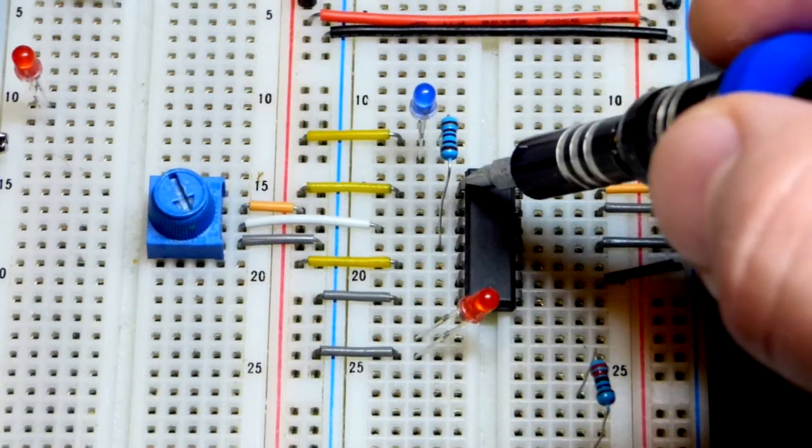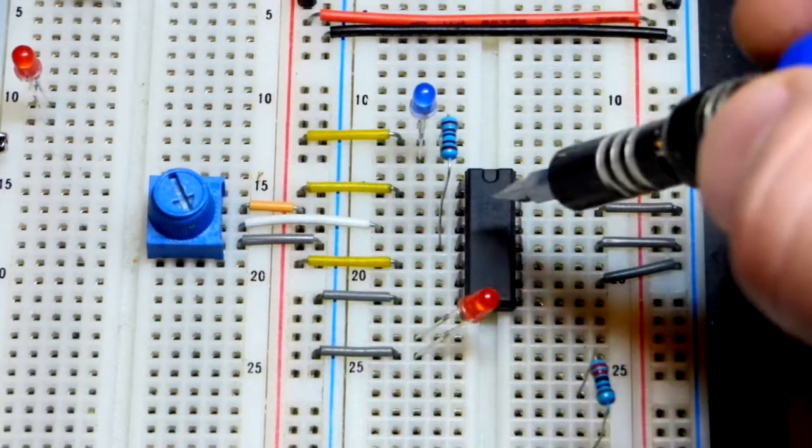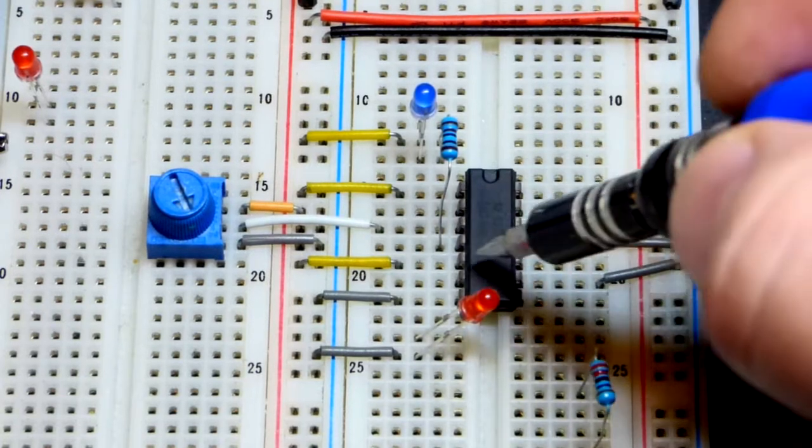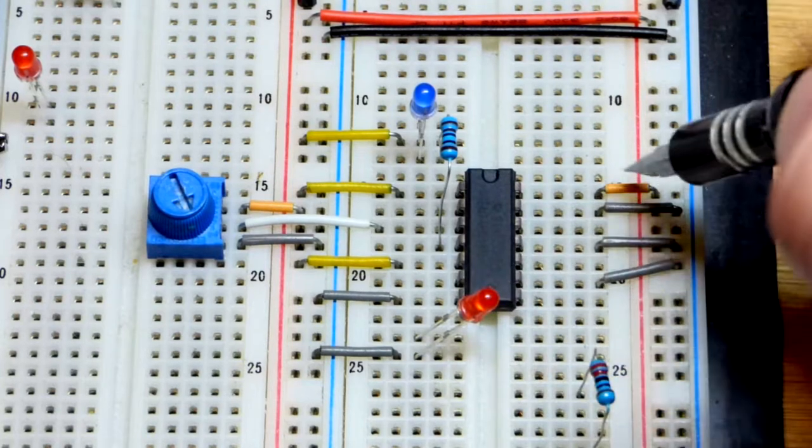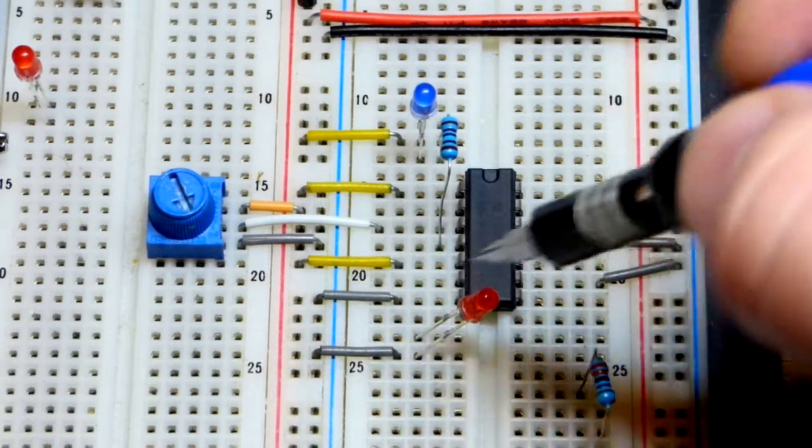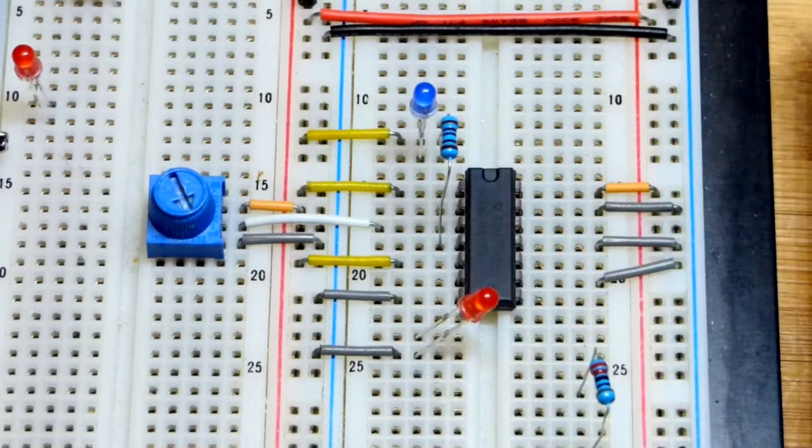We have this input up here directly to the positive supply. We can leave the outputs floating. That input is directly to the positive supply for powering VCC and ground - those two pins that we saw earlier. This is our variable.